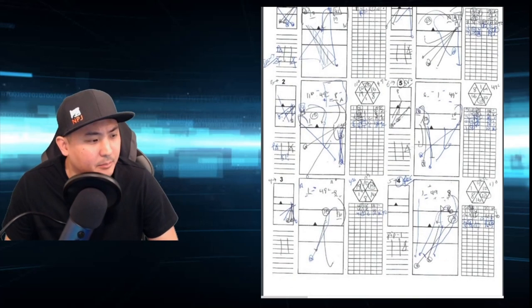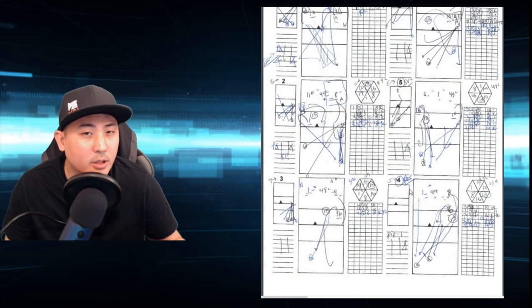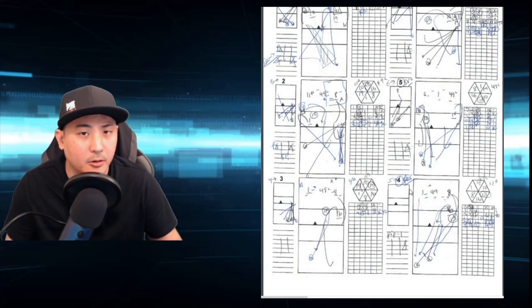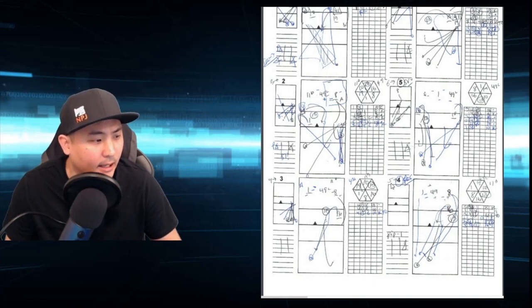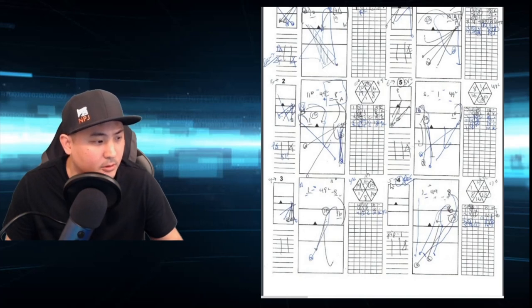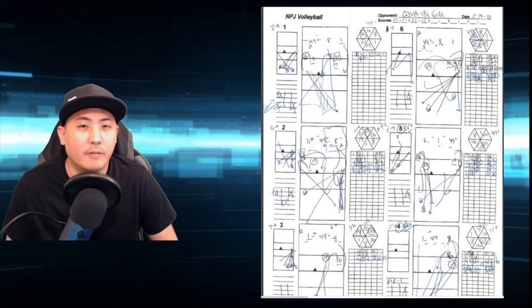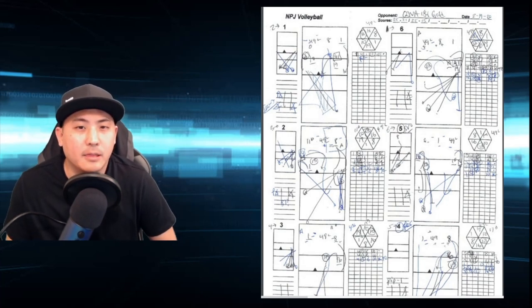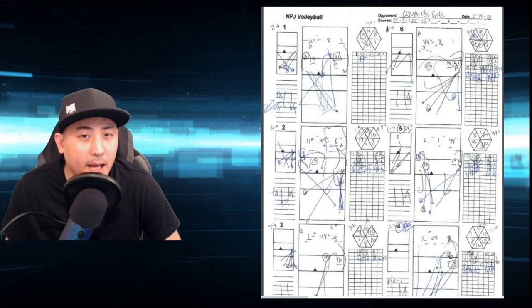In the next game, if they're going to start in rotation four on receive, we actually don't have to make any changes to where we're starting because we had already started in rotation five. We write that down on the lineup card again. And as we can see here, our sheet is telling us to start in rotation five when serving against their four. And there you have it — my quick and easy method to determining what rotation to start in to get the matchups that you want.